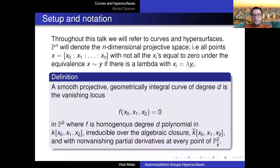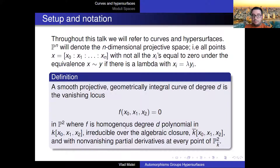What do we mean by a curve of degree d? A smooth projective geometrically integral curve is just the vanishing locus of a homogeneous polynomial of degree d, where irreducibility is over the algebraic closure. Smoothness means non-vanishing partial derivatives at every point.